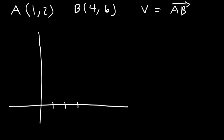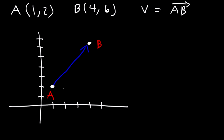The majority of the graph will be in the first quadrant. A is at (1, 2) and B is at (4, 6). The vector V extends from the initial point A to the terminal point B, and the length of that line is the magnitude of vector V. If we take the difference in the x values — subtracting 4 and 1 — we get 3, meaning we travel 3 units to the right, and we need to go up 4 units. Those are the components of vector V.